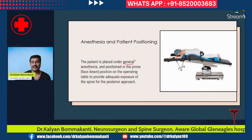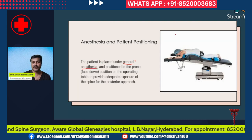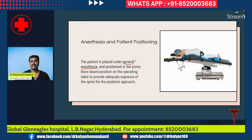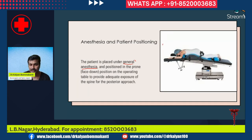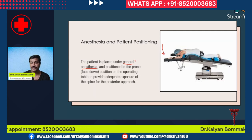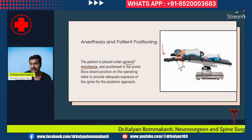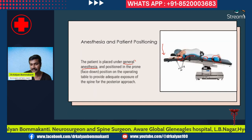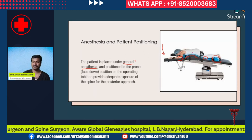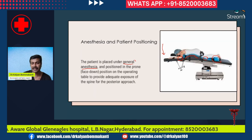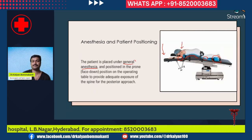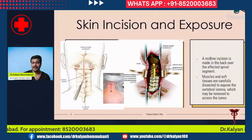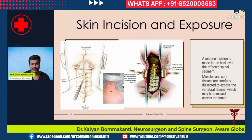For anesthesia, we always use general anesthesia. Spinal anesthesia is rarely used except in specific conditions. Since this is a posterior approach, the patient is placed prone on the operating table. Ensure all pressure points are properly padded — the knees and heels are padded, the abdomen is well supported and free because of the frame. Ensure the neck is properly positioned above heart level with no compression. The skin incision used is a midline incision made in the back over the affected spinal segment.